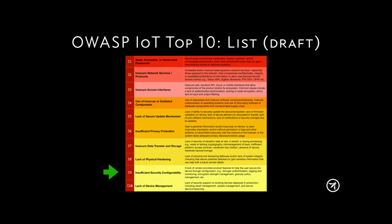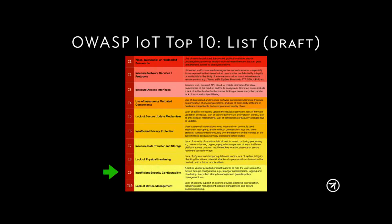Number six is privacy protection — this one goes without saying. Number seven is insecure data transfer and storage — basically any time outside the IoT ecosystem you are sending or storing data in an insecure way. Number eight is physical hardening — if you can touch the system, you can usually exploit it. This is the one I like the least right now, and this is all draft, all active conversation. Number nine — I put this one in in 2014 but I don't think I like it all that much anymore — it's about the manufacturer not giving you sufficient options to secure the system: they didn't give you ways to upgrade the encryption or protocols. Number ten is device management — where people are deploying thousands or hundreds of thousands of systems and they don't know where they are or the patch state.